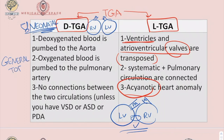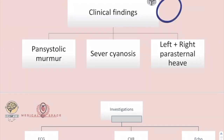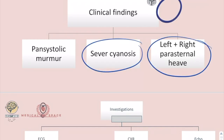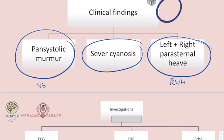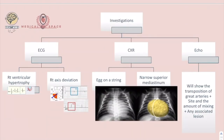Tetralogy of Fallot is the most common congenital cyanotic heart disease overall, accounting for about 10% of patients. The clinical findings in DTGA are severe cyanosis, left and right parasternal heave indicating right ventricular hypertrophy, and a pansystolic murmur depending on whether the ventricular septal defect is restrictive or not.